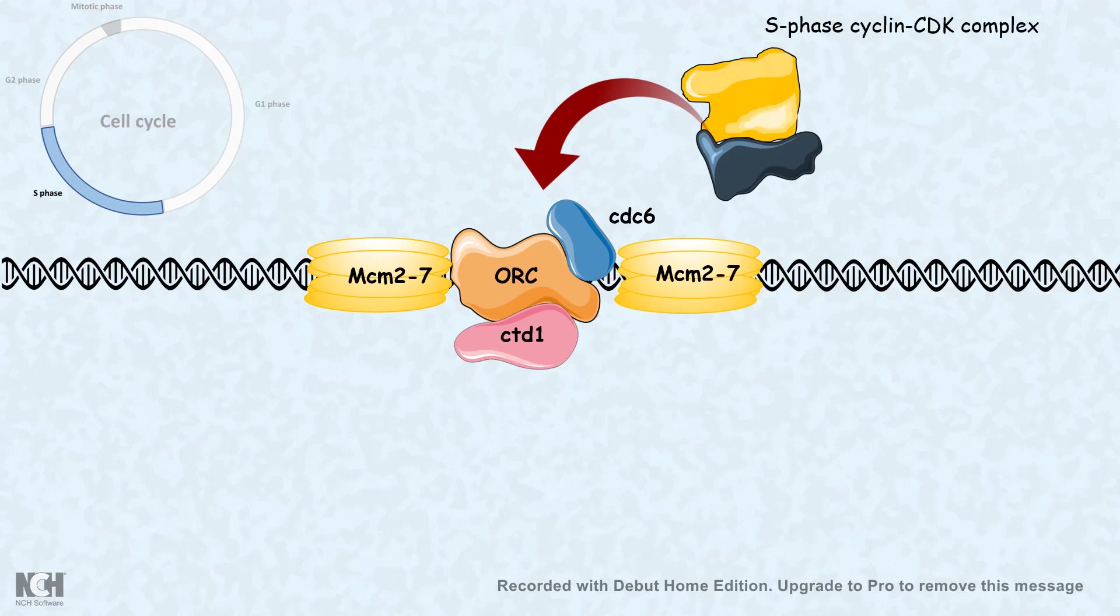So S phase cyclin phosphorylates several components of this origin of replication complex. It phosphorylates CTD1, CDC6, and also MCM2 and 7. As a result, the replication can initiate.